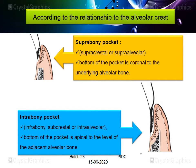According to the relationship of the alveolar crest, pockets are classified as supra-bony and infra-bony. In a supra-bony pocket (also called supra-crestal or supra-alveolar), the bottom of the pocket is coronal to the underlying alveolar bone. If the bottom of the pocket is apical to the level of the adjacent alveolar bone, we term it an infra-bony pocket (also called intra-bony, sub-crestal, or intra-alveolar pocket).